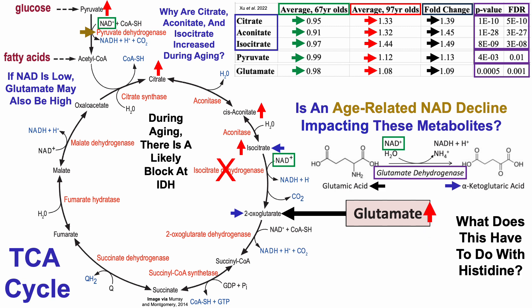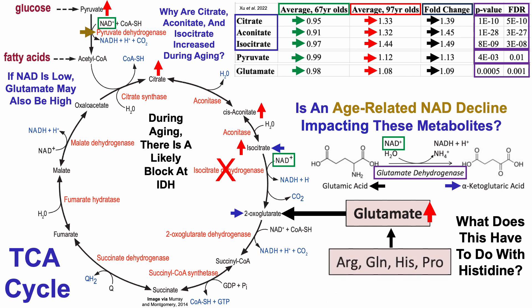Glutamate levels increase during aging, as just shown. So what does this have to do with histidine? There are four amino acids that can be converted into glutamate to try to help get around this potential age-related block in the TCA cycle: arginine (ARG), glutamine (GLN), proline (PRO), and histidine (HIS). Histidine levels decline during aging — 0.93 in the 97-year-olds versus 1.02 in the 67-year-olds, 9% lower in the oldest group, and significantly lower.